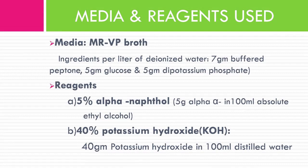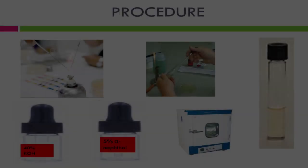Media and reagents for the VP test: the medium is MRVP broth containing buffered peptone, glucose, and dipotassium phosphate in distilled water. Two reagents are used: alpha-naphthol (5 grams in 100 ml absolute ethanol) and potassium hydroxide (40% solution — potassium hydroxide in distilled water).